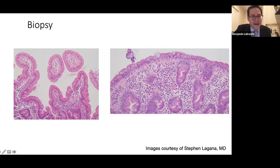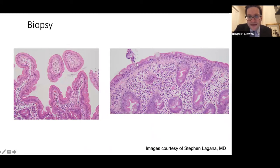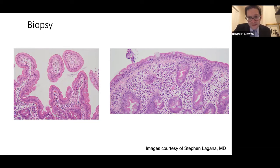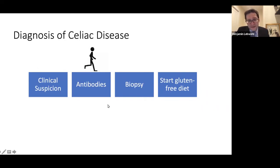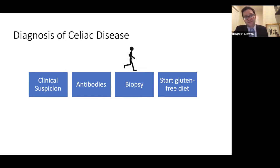Shown on the left is a normal biopsy result — someone who does not have celiac disease — and you can see there's a normal villus with a finger-like projection. Shown on the right, you can't see those projections because they're all flat. This is someone with celiac disease who's still eating gluten because the diagnosis has just been made. Typically we start with clinical suspicion, the antibody blood tests are checked, and then as a result of a positive antibody a biopsy is performed. If it shows villus atrophy, the diagnosis is confirmed and the gluten-free diet is begun.